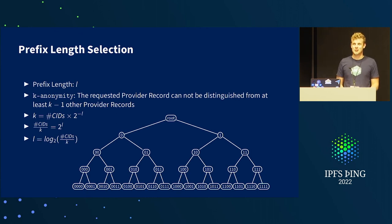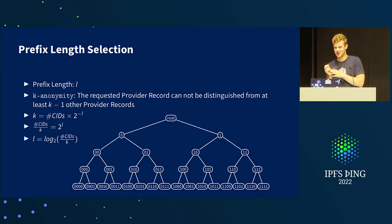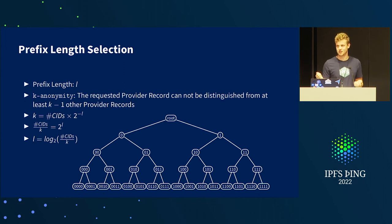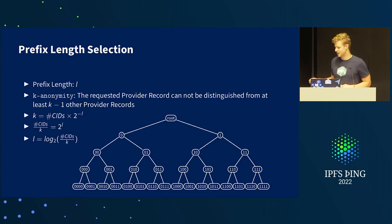The challenge is that privacy and content routing are in tension: if you make each file request distinct, you lose the ability to route to it. Using a suffix or any other non-prefix method loses the routing property. With a prefix, you know the target is within a specific zone of the keyspace, so you can route there. Any other technique breaks content routing, unless you add something like one provider record per reader, which doesn't scale.